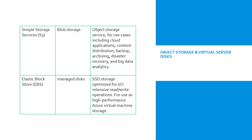In Azure storage, subscription-bound storage accounts allow you to create and manage the following storage services: Blob storage, Table storage, Queue storage, and File storage. Blob storage stores any type of text or binary data such as documents, media files, or application installers, and serves the same purpose as both AWS S3 and EBS. Table storage stores structured datasets and is a NoSQL key-attribute data store that allows for rapid development and fast access to large quantities of data.